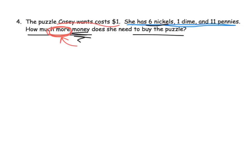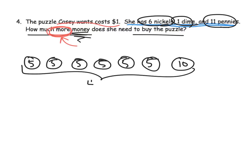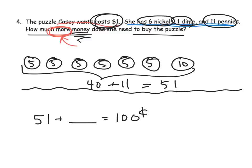She has six nickels: 5, 10, 15, 20, 25, 30. She has one dime, so that's 40, plus 11 pennies. So 40 cents plus 11 more pennies is 51 cents. Casey currently has 51 cents, and she wants to save a dollar. So we're going to say 51 plus what gives us a dollar, meaning 100 cents. And that answer is 49 cents.